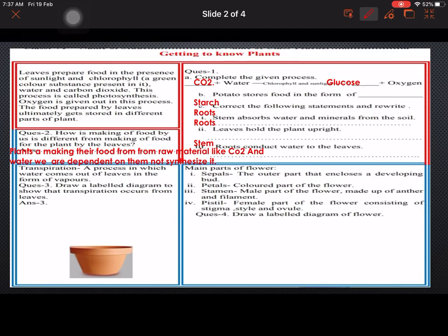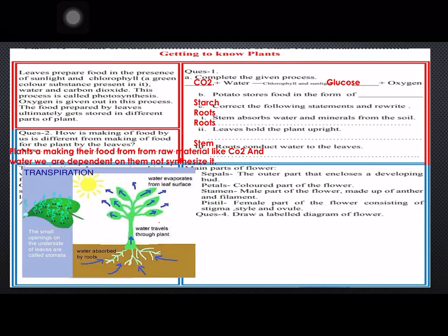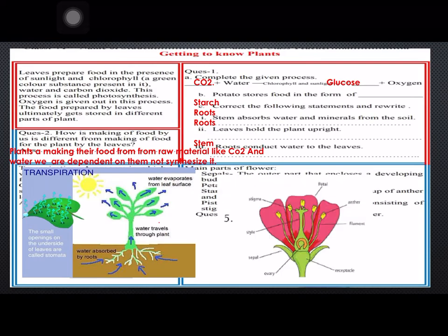Question number three: You have to draw a labeled diagram. This is your labeled diagram, you can see from here you have to draw this diagram. Question number four: Again you have to draw a labeled diagram of a flower labeling the different parts. You can draw this diagram.